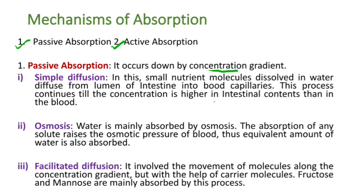In facilitated diffusion, it involves the movement of molecules along the concentration gradient but with the help of carrier molecules. Therefore it is a rapid process compared to simple diffusion, as nutrient molecules are carried across the cell membrane by carrier protein molecules. Fructose and mannose are mainly absorbed by the process of facilitated diffusion.